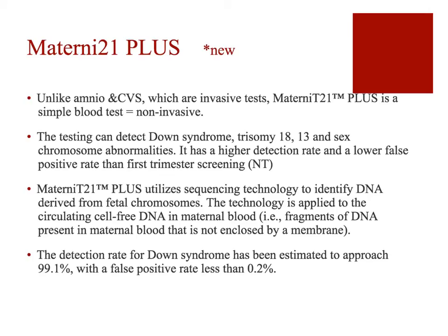A newer test — not on our exams or NCLEX but worth knowing — is MaterniT21. We're now able to do simply blood work on the woman, and through circulating free cell DNA, which are fragments from the fetus found in the mom's blood, we can detect Down syndrome in a fetus at a 99.1% detection rate.